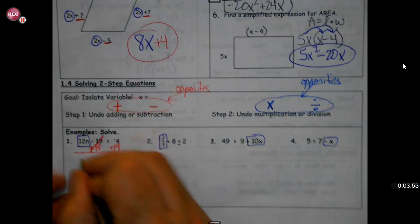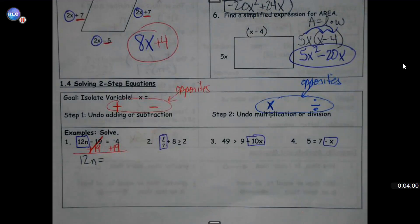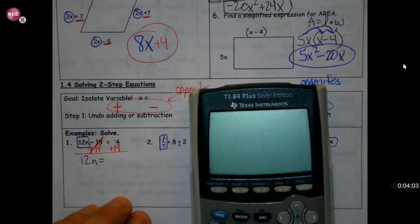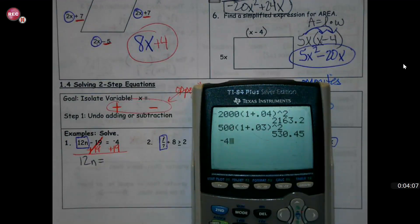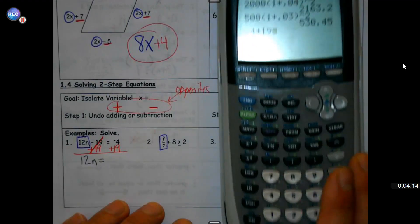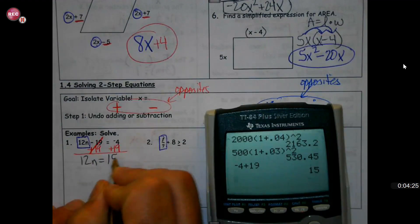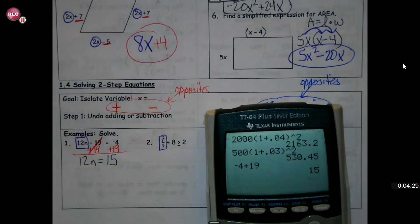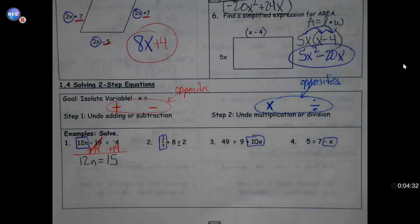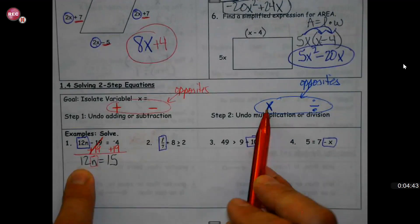If we're getting the steps down and you need to take a moment and plug something into your calculator for help, that's fine. Remember, the negative button — when you have negative four, that's the button you want; otherwise the calculator won't like it. Once I've got that first step done, I still want to get n by itself. Since I'm multiplying by 12 and don't see any addition or subtraction, the opposite of multiply is to divide.